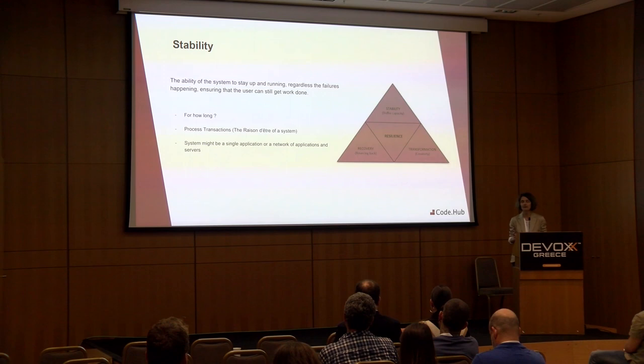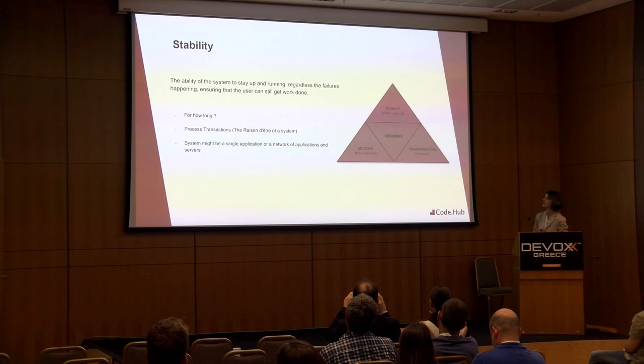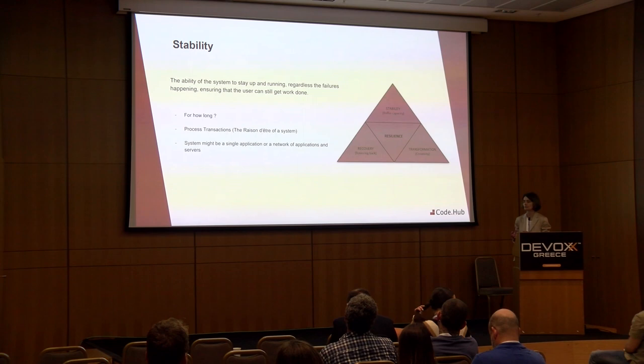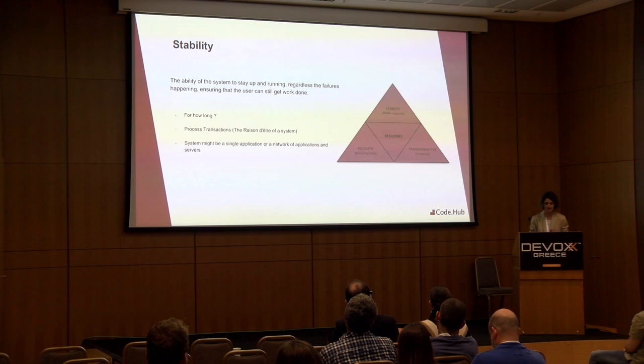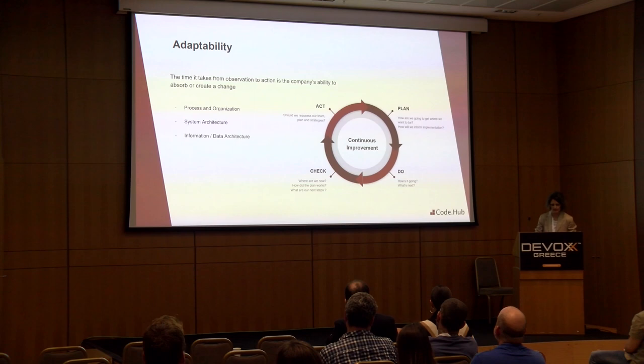We want to get input from users, input from other systems, update our internal view and model, and communicate to other systems. A system might be a single application or a network of applications and servers. We need to define the system that this capability is valid for. Later we will see patterns for how not to propagate failure to other systems, or make trade-offs — for example, using a kill list to decide which systems stay up and which get killed to avoid an outage.